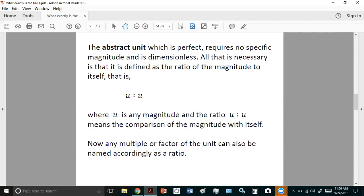it doesn't have to be a length magnitude, it could be a mass, area, volume, any other particular magnitude you care to think of. If it's being compared to itself, it gives rise to the idea of the unit. So U is any magnitude, and the ratio U compared with U means the comparison of the magnitude with itself. And then everything else we measure is based on U. So that if it's a multiple or a factor of the unit, we can give it a name accordingly as a ratio. So we can call every number or name every number as a ratio.